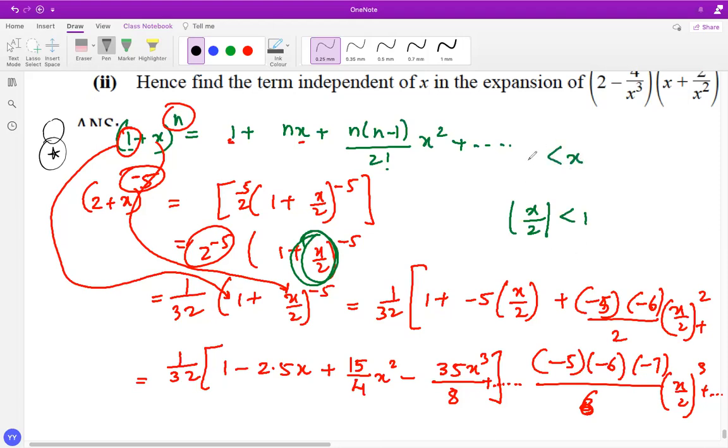If I consider x/2 should be between -1 and 1, that means x should be between -2 and 2. So if I take any x values between these two, -2 and 2, this series can be used to find out that value.